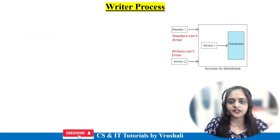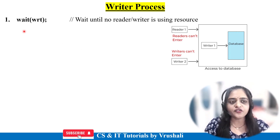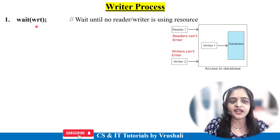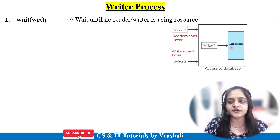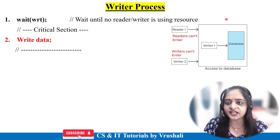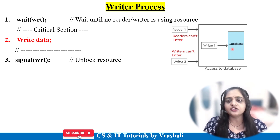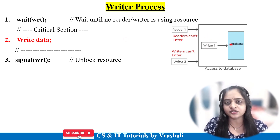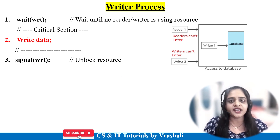The writer process works as follows. Step 1: wait(write) — when a reader is reading the database, the writer waits. When the reader releases the resource, it is allocated to the writer. Step 2: the writer enters the critical section and performs the write/update operation. Step 3: signal(write) — after the update, the writer releases the resource. wait means acquire the resource; signal means release the resource. In this way, the writer performs the write operation without conflicting with others.